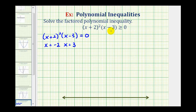When we plot these points on the number line to show they are solutions, we'll plot closed points on negative two and three. If the inequality symbol were only greater than zero (not 'or equal to'), these values would not be part of the solution and we would plot open points instead.